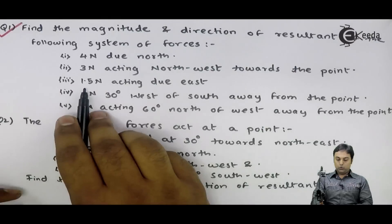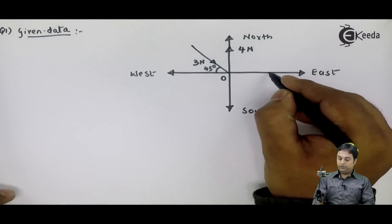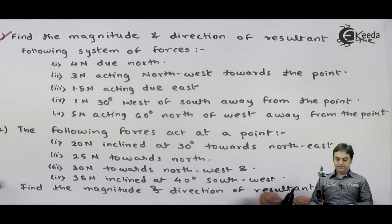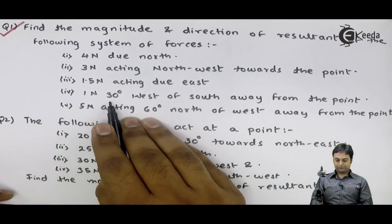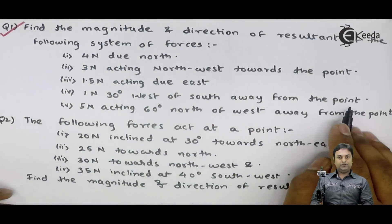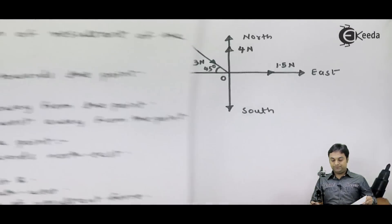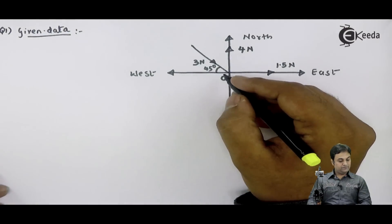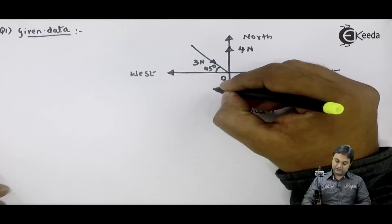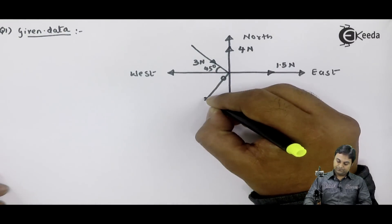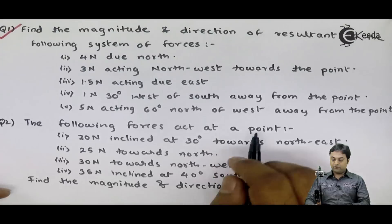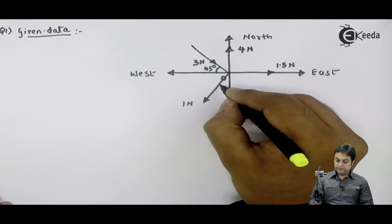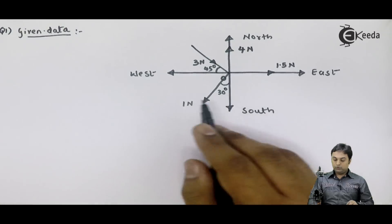The third force is 1.5 Newton acting due east. The fourth force is 1 Newton at 30 degrees west of south, away from the point. West of south means it is 30 degrees to the west side of the south direction, and since it is away from the point, the value is 1 Newton at 30 degrees to the west of south.